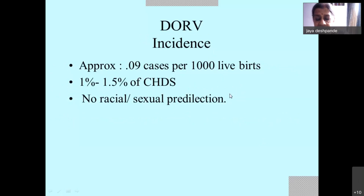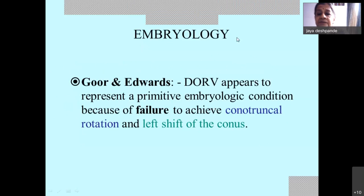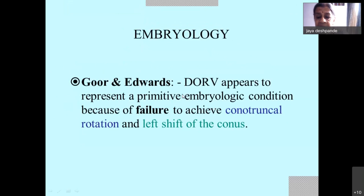The general incidence is 0.09 cases per thousand live births and constitutes 1 to 1.5% of congenital heart disease. There is no racial or sexual predilection. Regarding embryology, Gore and Edwards said that DORV appears to represent a primitive embryological condition because there is failure to achieve conotruncal rotation and a leftward shift of the conus.